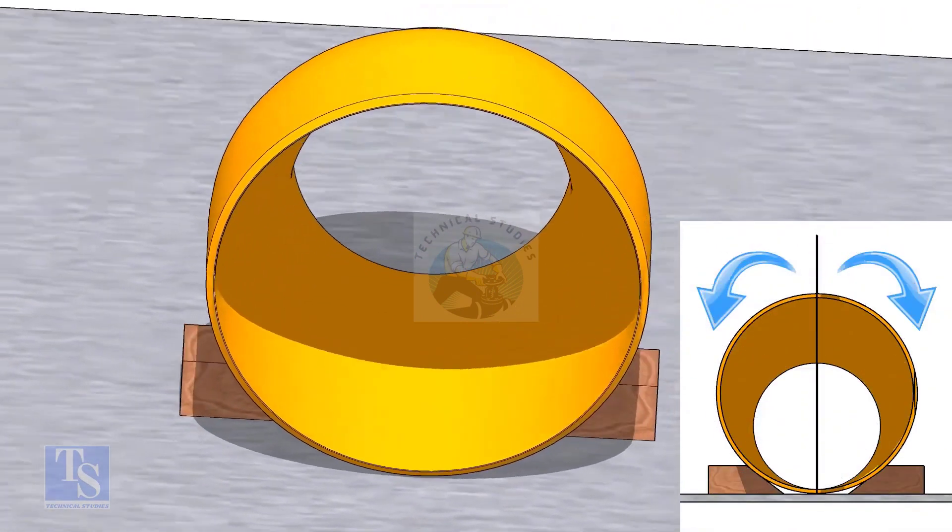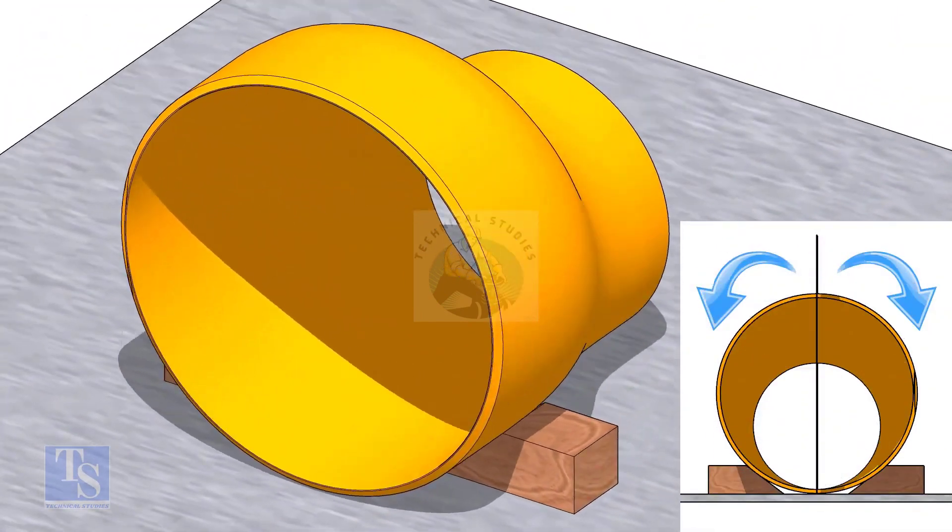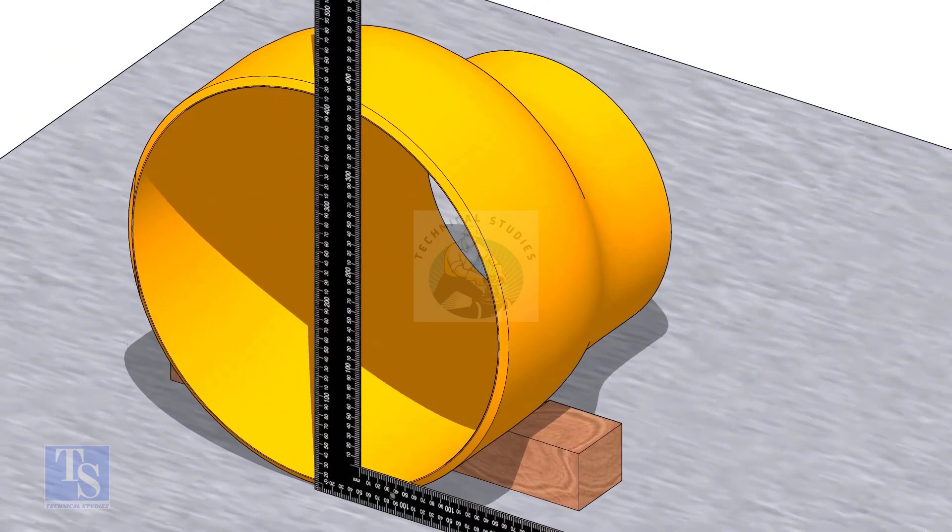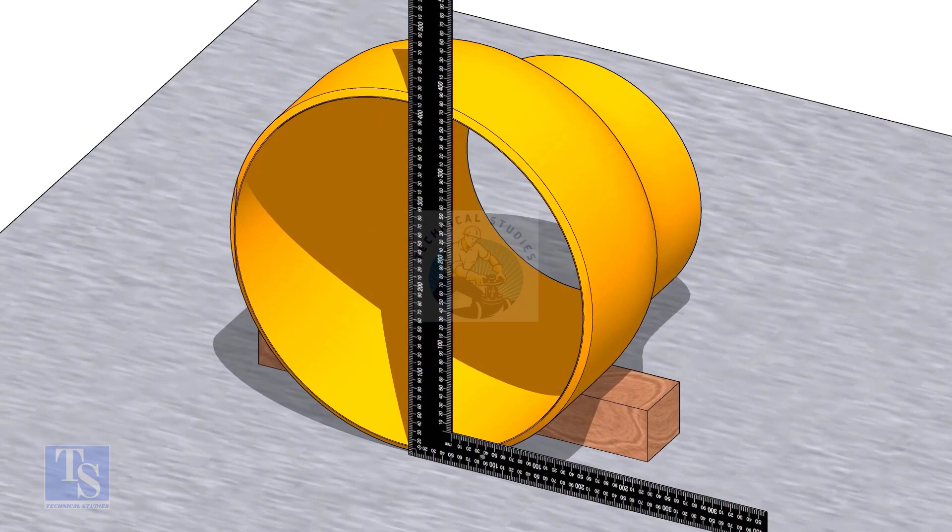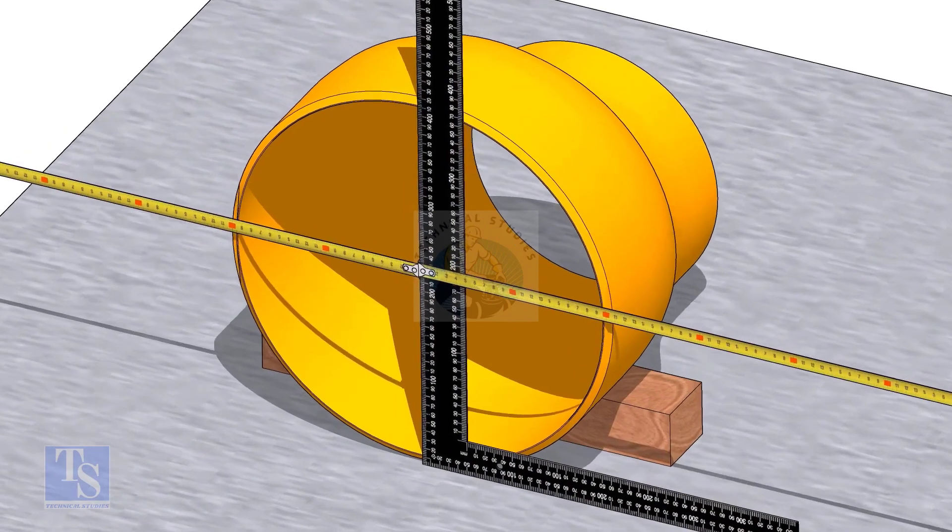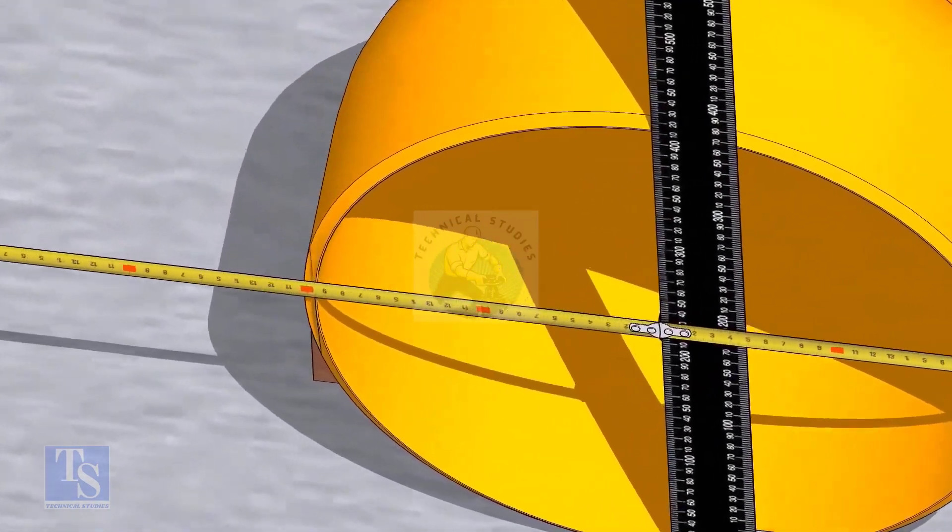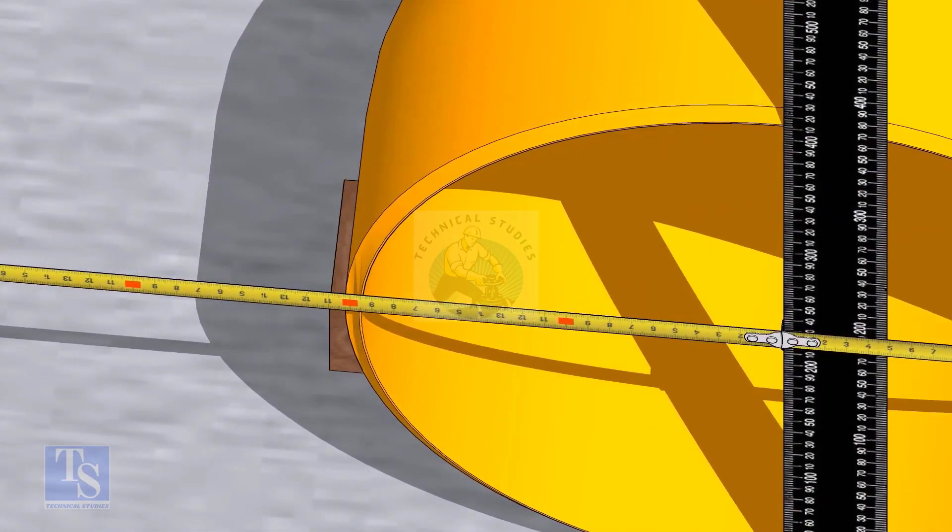Now lock the reducer from both sides to restrict it from rotation. Put a right angle on the face of the reducer as shown. Measure the distance from the right angle to the outer face of the reducer. Make it equal by moving the right angle.